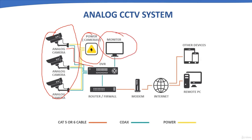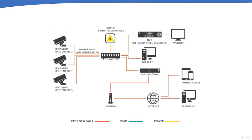The Digital Video Recorder converts analog signals into digital signals and then compresses the data so it can be stored on a hard disk drive. For internet viewing of live or recorded footage, the DVR is connected to the internet via a modem. The video quality of analog CCTV systems is generally measured in TV lines or VGA, which is lower than the video quality offered by IP CCTV systems.